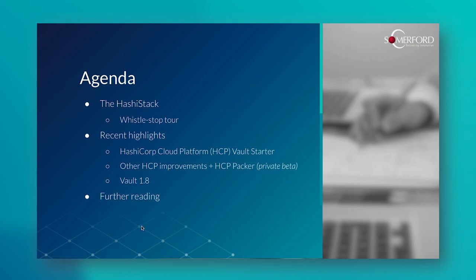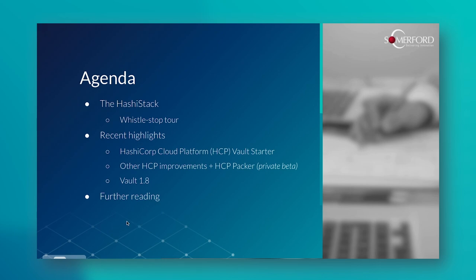For those who aren't familiar with the HashiStack, we'll do a quick tour around the four main products. There is an open source version of them as well, but some of the features we'll be talking about are enterprise only — I'll try to highlight those when they come up. This time around we're going to be mostly focusing on HCP. Specifically there's a new package with HCP Vault, and there's been some more general improvements with the platform overall, including a new service. Packer is in private beta right now. And then we'll finish up with Vault 1.8.